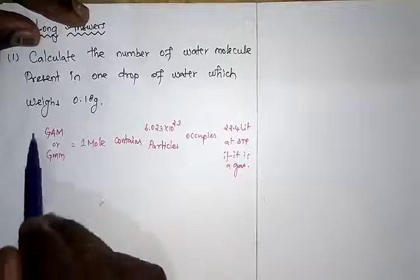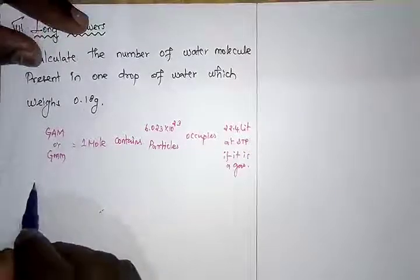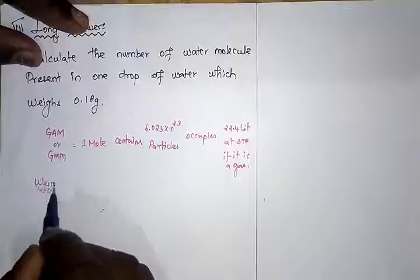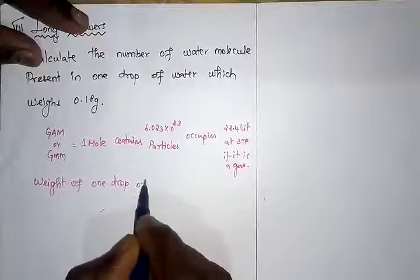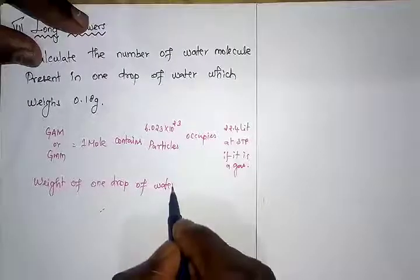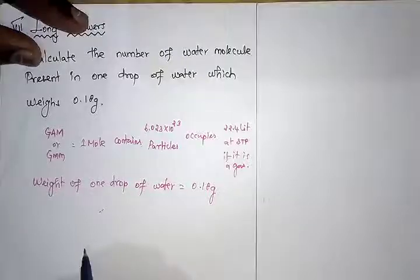So what they have given is weight of one drop of water, which is equal to 0.18 grams. This weight - what is the first step in calculating number of water molecules?